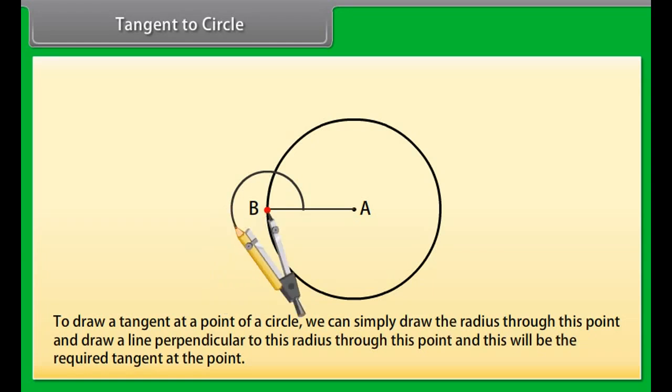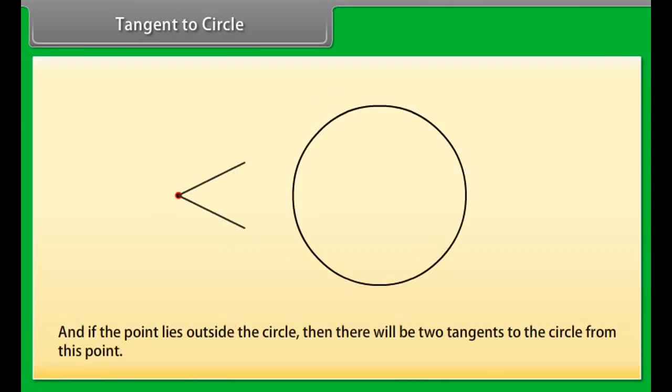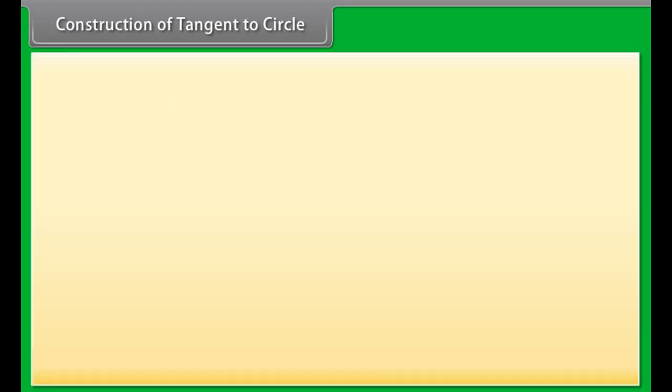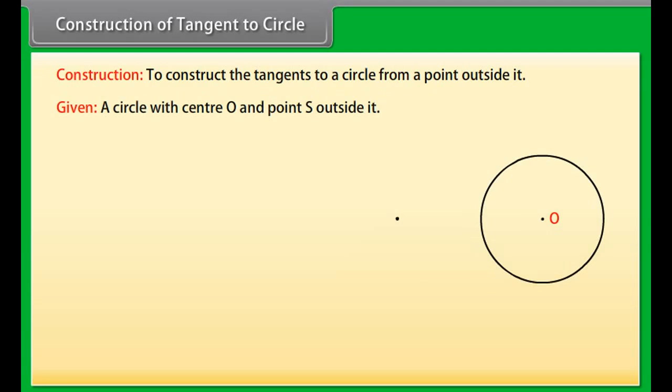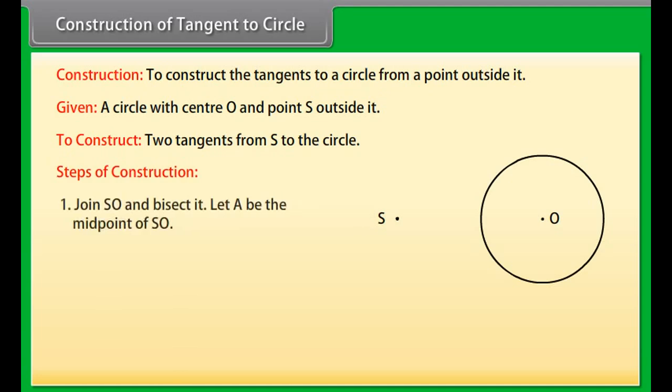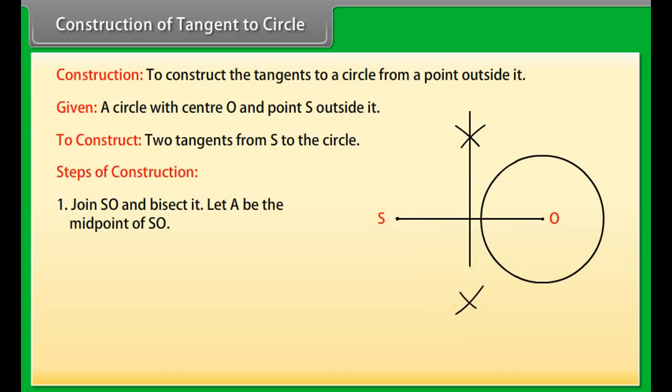Tangent to a circle. We know that if a point lies inside a circle, then there cannot be a tangent to the circle through this point. If a point lies on the circle, then there is only one tangent to the circle at this point. The tangent is perpendicular to the radius through this point. Therefore, to draw a tangent at a point of a circle, we can simply draw the radius through this point and draw a line perpendicular to this radius through this point and this will be the required tangent at that point. And if the point lies outside the circle, then there will be two tangents to the circle from this point.